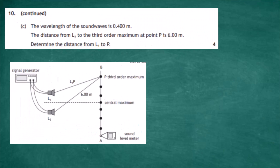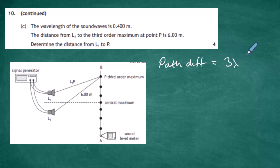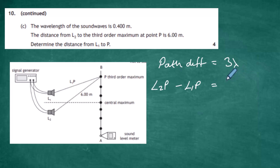Part (c): the wavelength of the sound waves is 0.400 m. The distance from L2 to the third order maximum at point P is 6 m. We need to determine the distance from L1 to P. The condition for a third order maximum is that the path difference equals 3λ. Since λ = 0.400 m, the path difference equals 3 × 0.400 = 1.200 m.